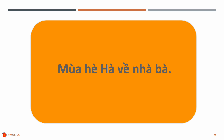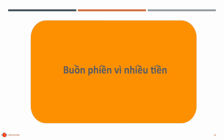Now with normal speed: Mùa hè ha về nhà ba. Second sentence, slowly: Buồn, phiền, vì, nhiều tiền. A little bit faster: Buồn phiền, vì, nhiều tiền. Now with normal speed: Buồn phiền vì nhiều tiền.